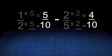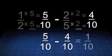Now because both denominators are equal, we can subtract. 5 tenths minus 4 tenths equals 1 tenth.